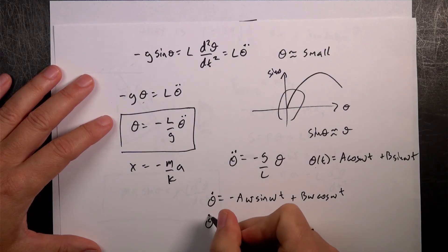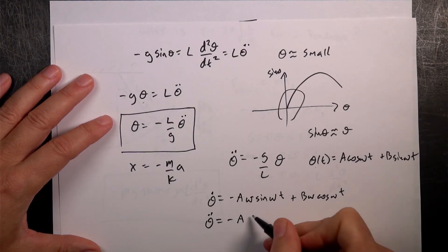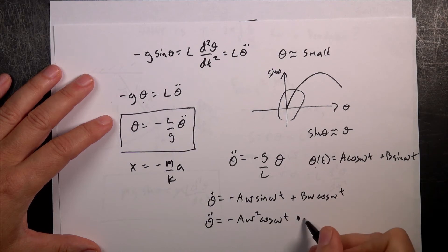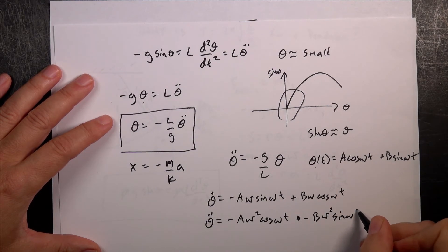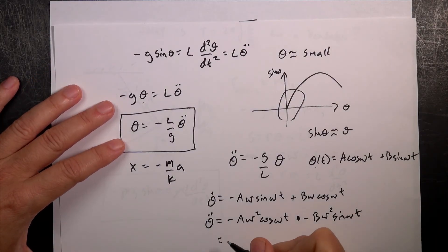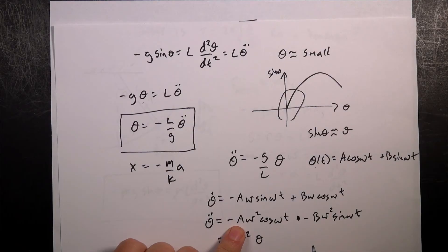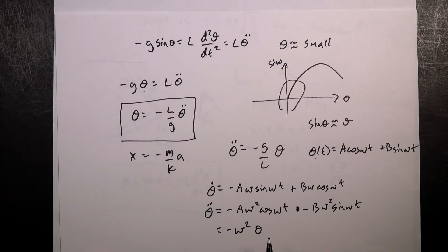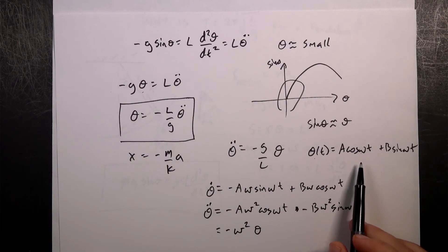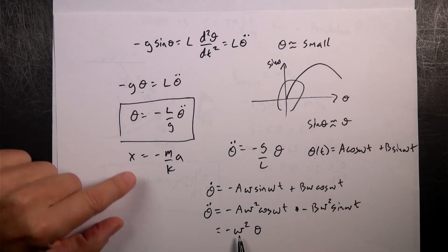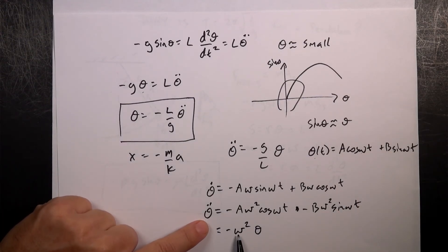Now, I need to take the derivative again, theta double dot is going to be, now the derivative of sine is cosine, so I get negative A omega squared cosine omega t. And then, I get minus B omega squared sine omega t. This is equal to negative omega squared theta, right? If I factor out the negative omega squared, I have A cosine omega t plus B sine omega t, which is what I started with.